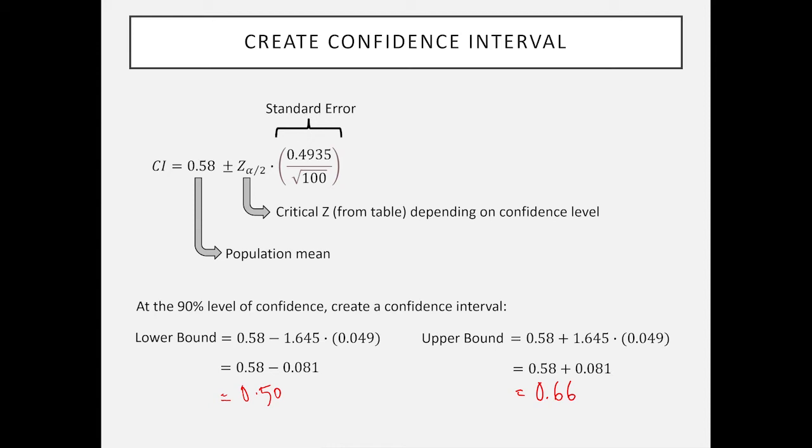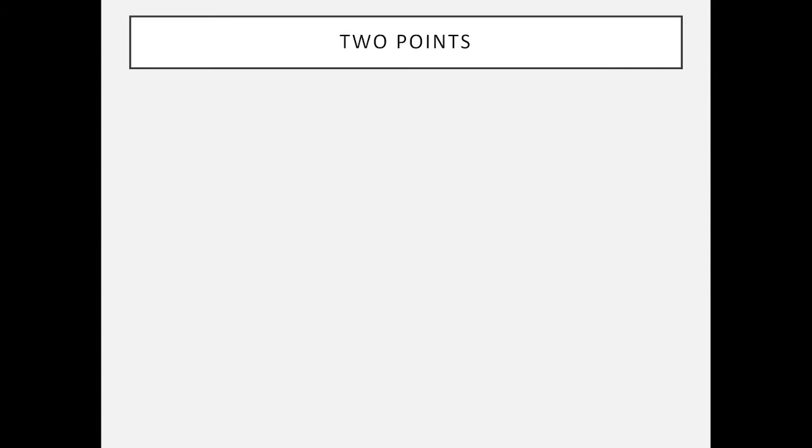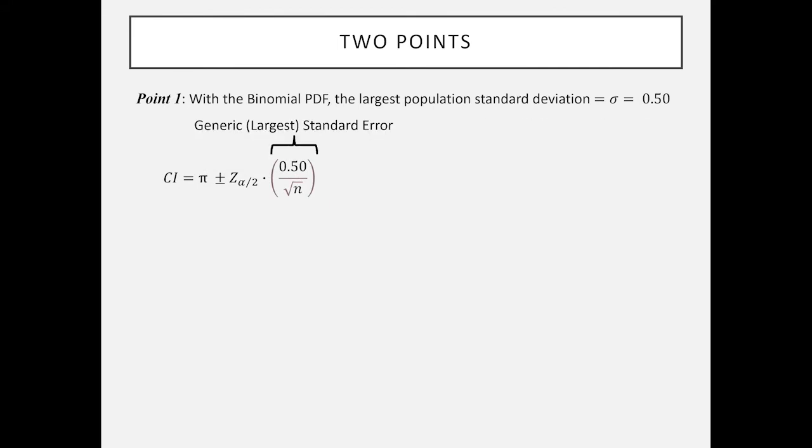I want to make two points about this. First, in the case of the binomial PDF it happens that the largest population standard deviation is equal to 0.5. I'm going to leave that as a bonus quiz if you want to show it or prove it. This means if we want to make the margin of error as wide as possible, which is a way of making it safe so that we're including every possibility, we can simply state that rather than calculate the population standard deviation if we don't know it, we just put in 0.5.